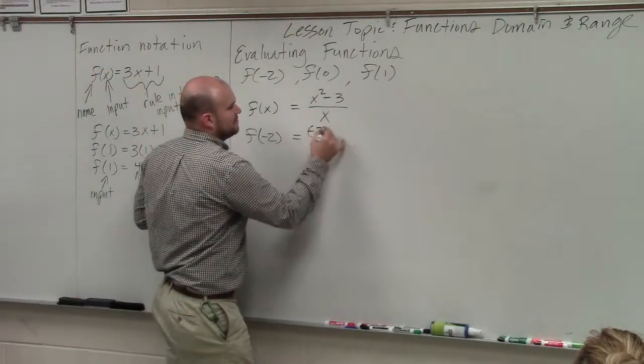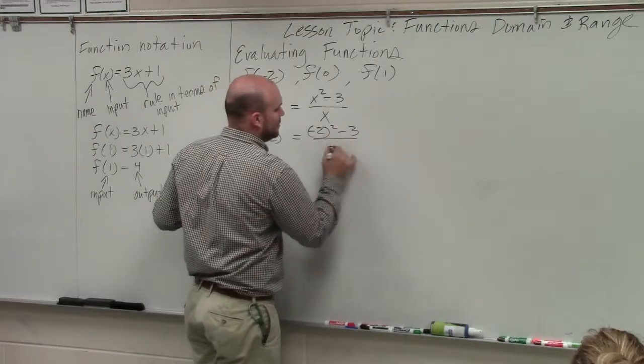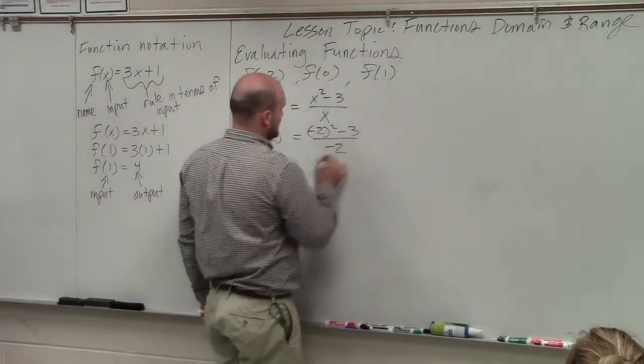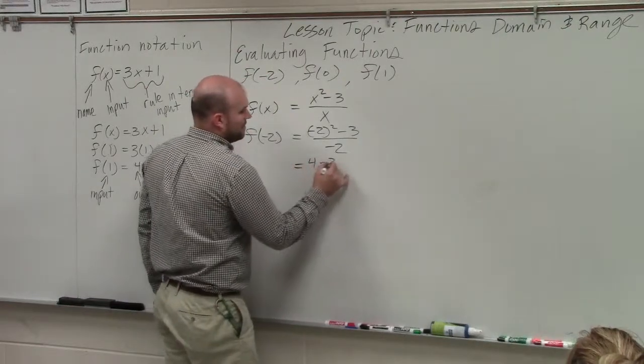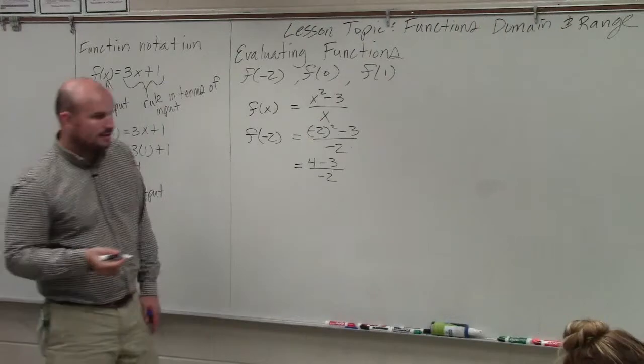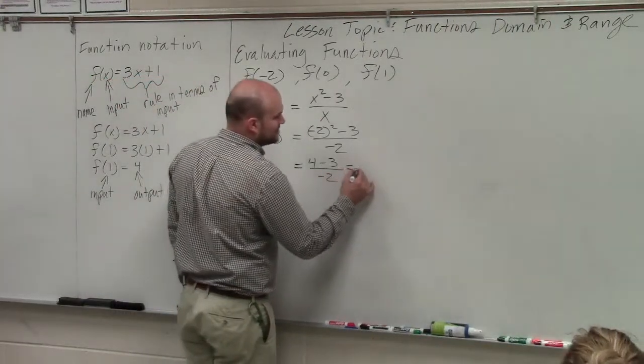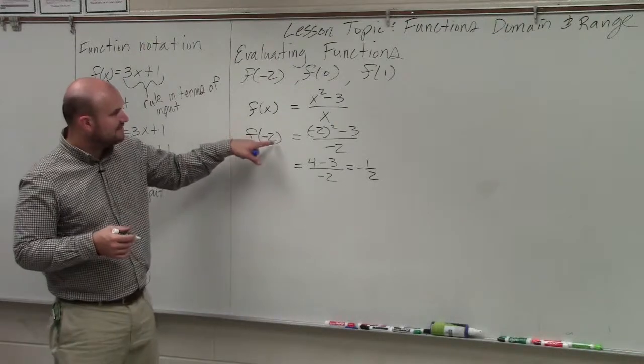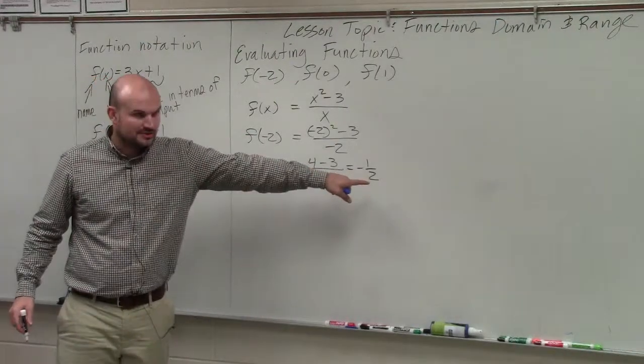So I have negative 2 squared minus 3 over negative 2. Negative 2 squared is equal to 4 minus 3 divided by negative 2. 4 minus 3 is 1. 1 divided by negative 2 is going to be negative 1 half. So basically we could say f of negative 2 is equal to negative 1 half.